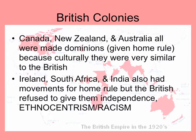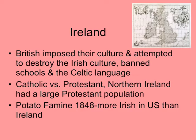The British colonies: Canada, New Zealand, and Australia all get made into dominions — in other words, they get home rule. They control all of their domestic affairs, but they are still linked to Britain in terms of trade and foreign policy. This is because culturally they're very similar to the British — they look like the British, they act like the British, they talk like the British. Ireland, South Africa, and India also have movements for home rule, but the British refuse to give them independence, and this is based on ethnocentrism and out-and-out racism. In terms of Ireland, it's a lot of ethnocentrism because the Irish are Catholic and the British are not. In South Africa and India, it's blatant racism where they think that people with darker skin are simply inferior to them.